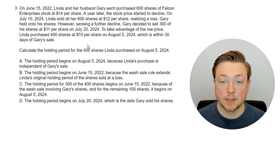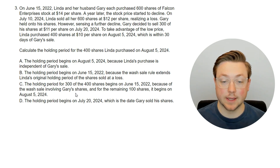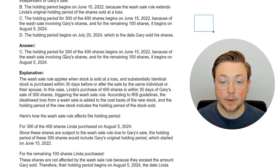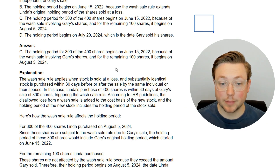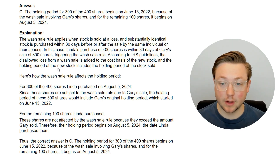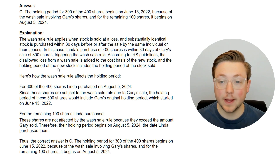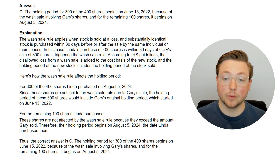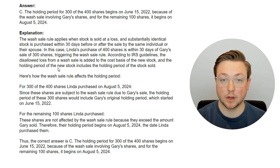Pause the video, read through this, and see if you can guess what might happen. The correct answer is C: the holding period for 300 of the 400 shares begins on June 15 because of the wash sale involving Gary's shares, and the remaining 100 shares' holding period begins on August 5th. The wash sale rule applies when stock is sold at a loss. Linda's purchase of 400 shares is within 30 days of Gary's sale of 300 shares, triggering the wash sale rule. Per IRS guidelines, the disallowed loss from a wash sale is added to the cost basis of the new stock, and the holding period of the new stock includes the holding period of the stock sold.